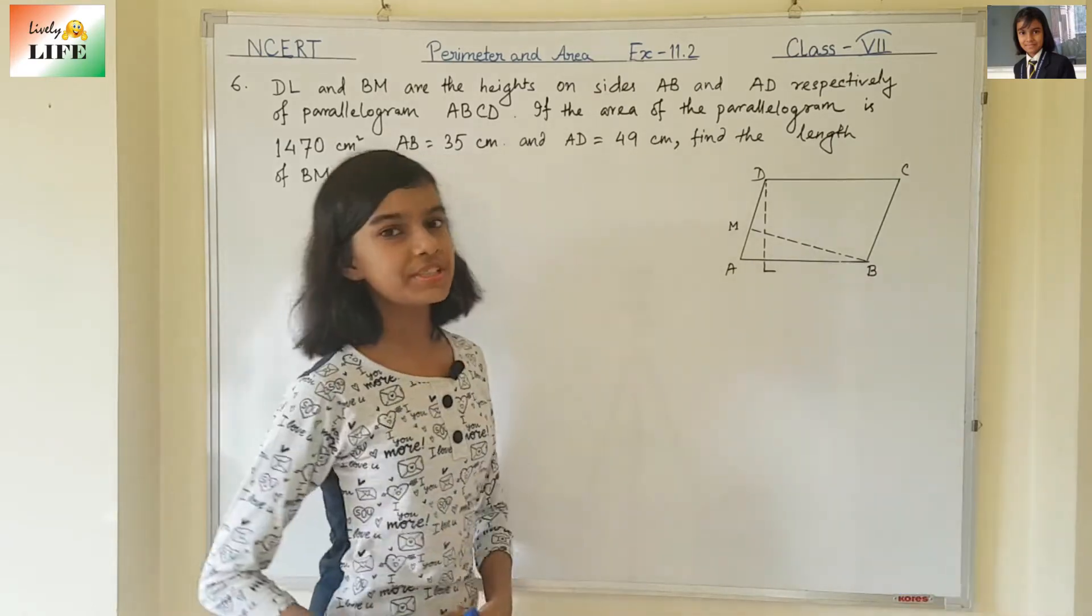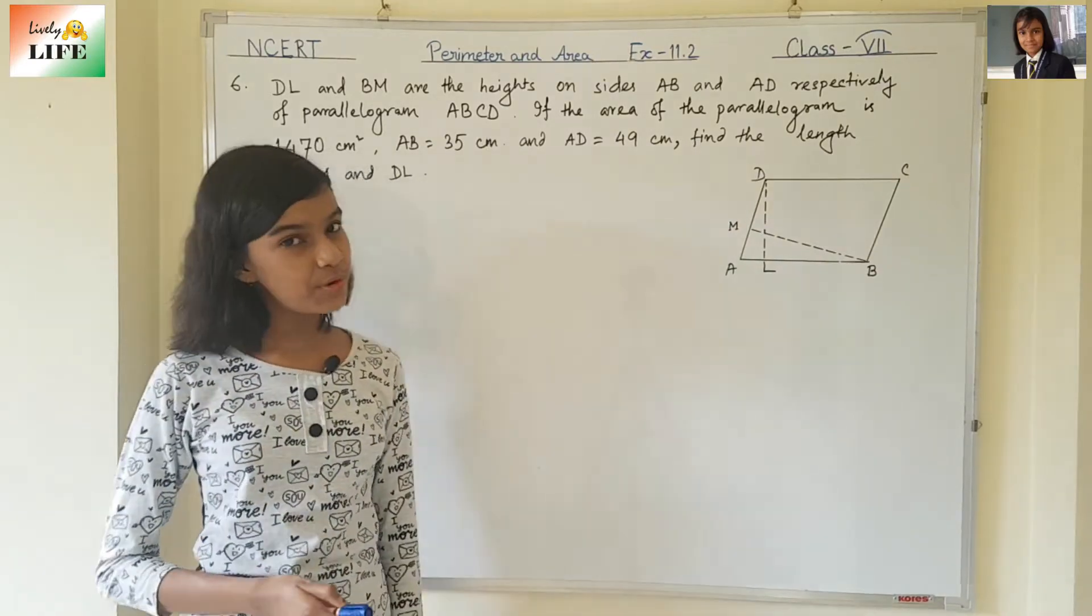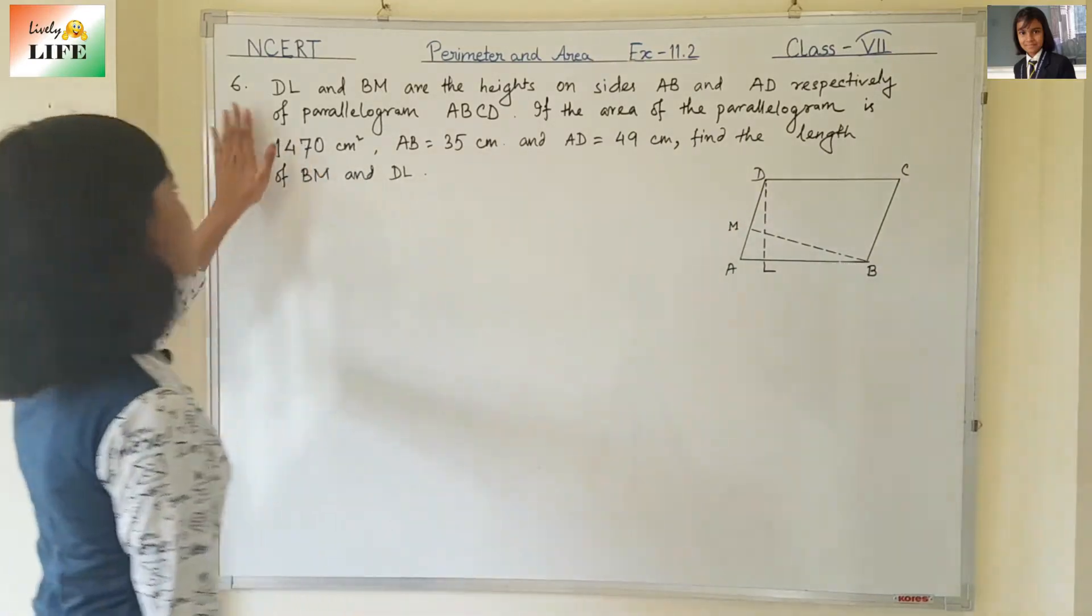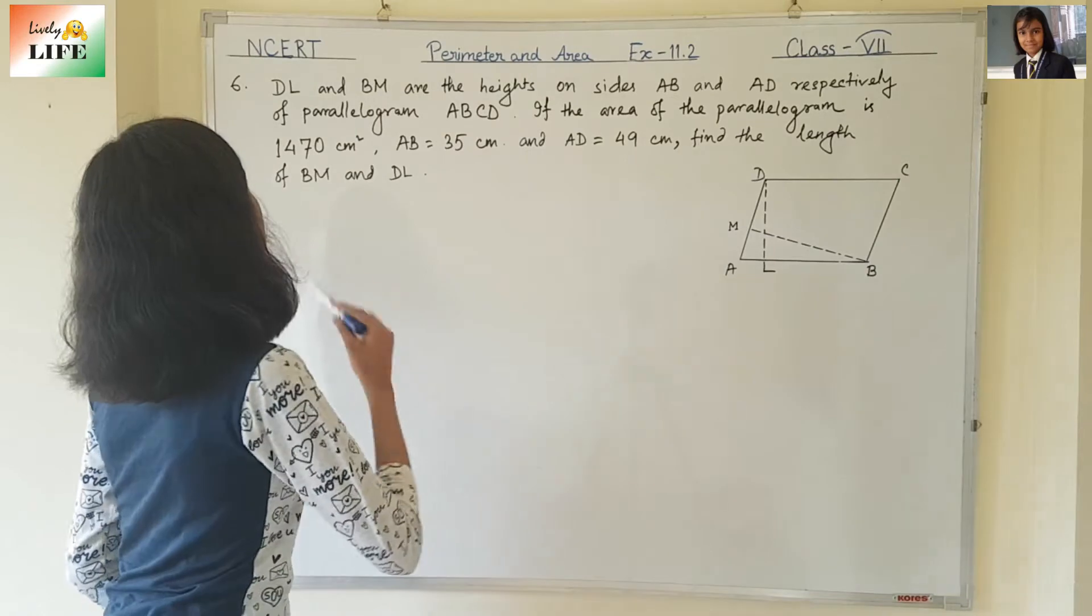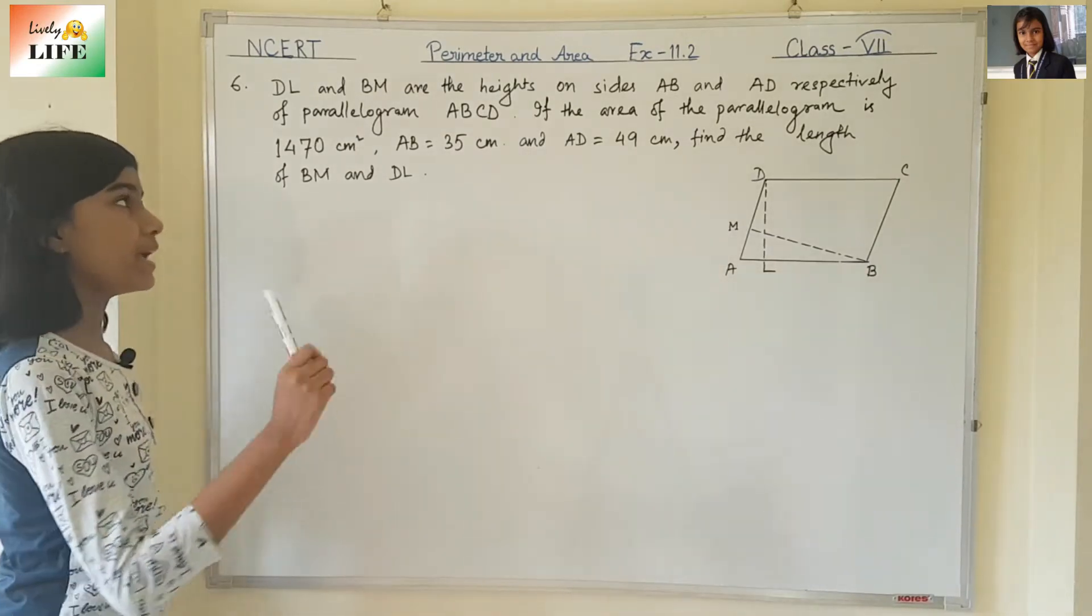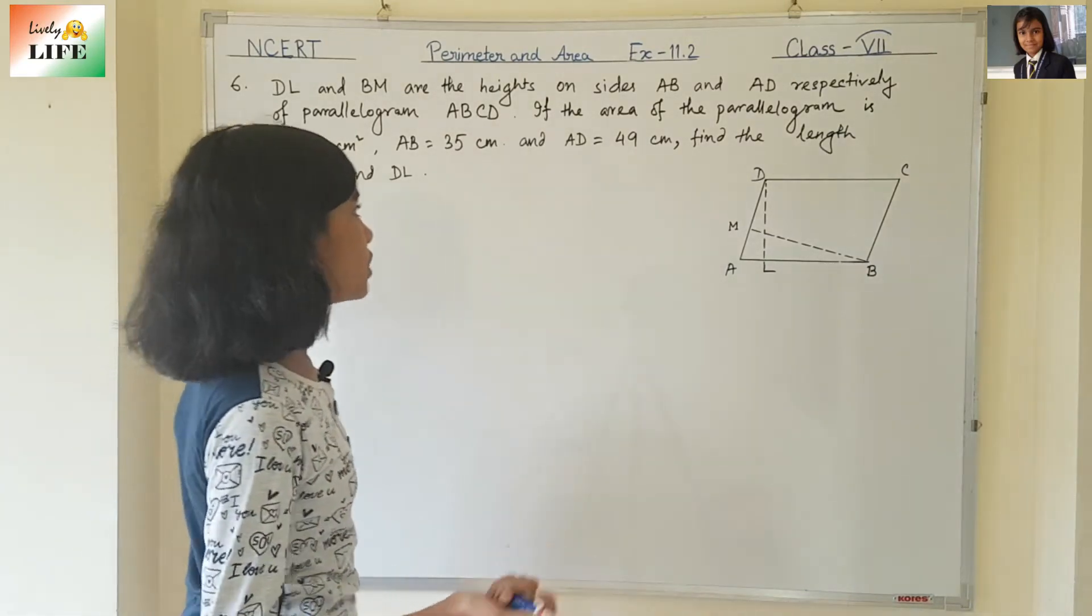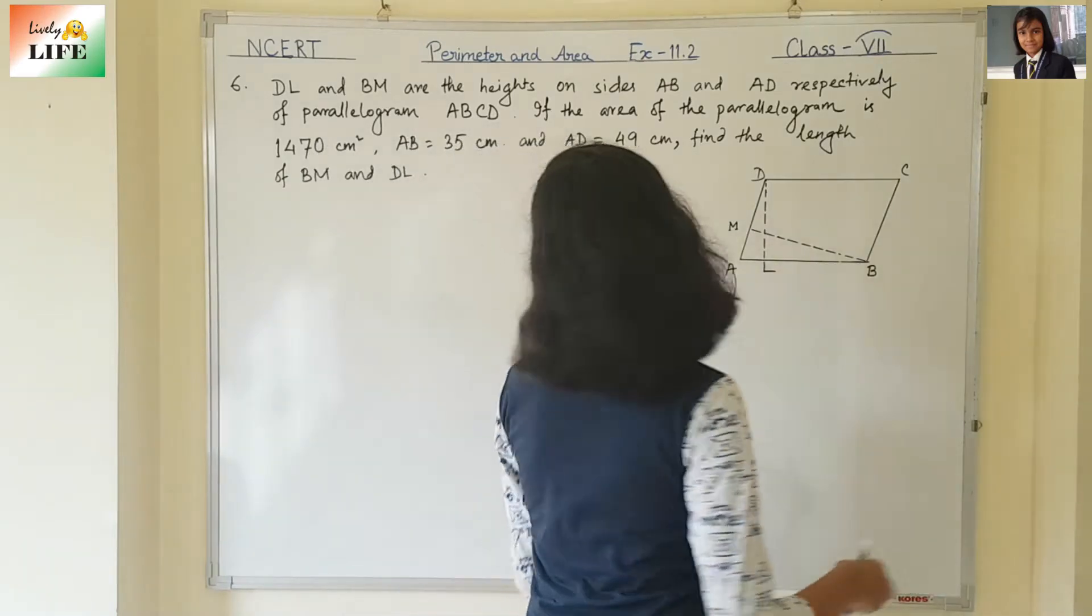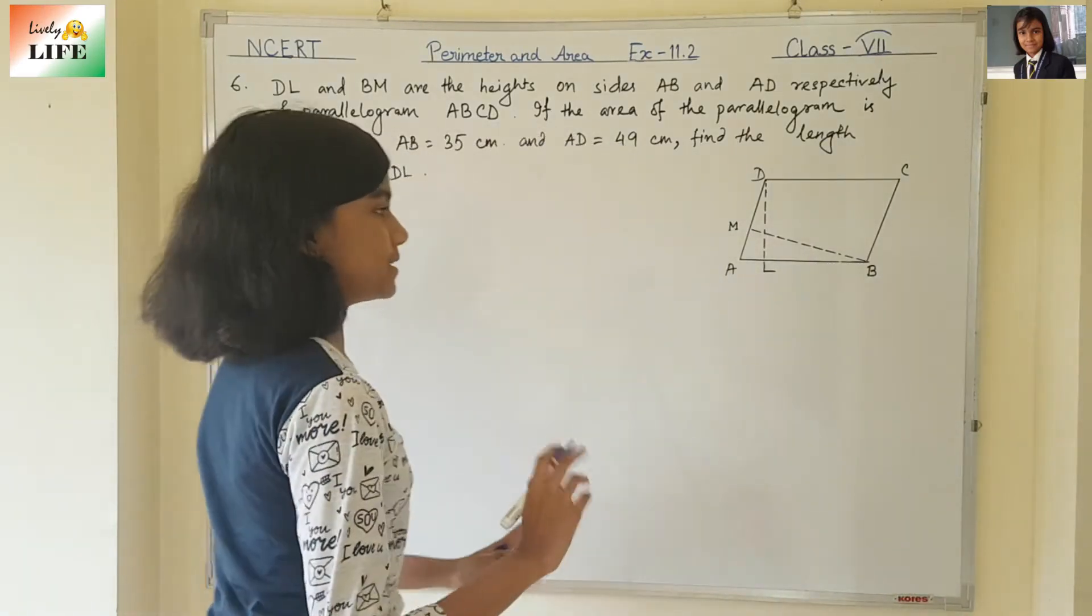In the previous video, we have already completed question number 5 of exercise 11.2. Now, we are going to start with question number 6. DL and BM are the heights on sides AB and AD respectively of parallelogram ABCD.